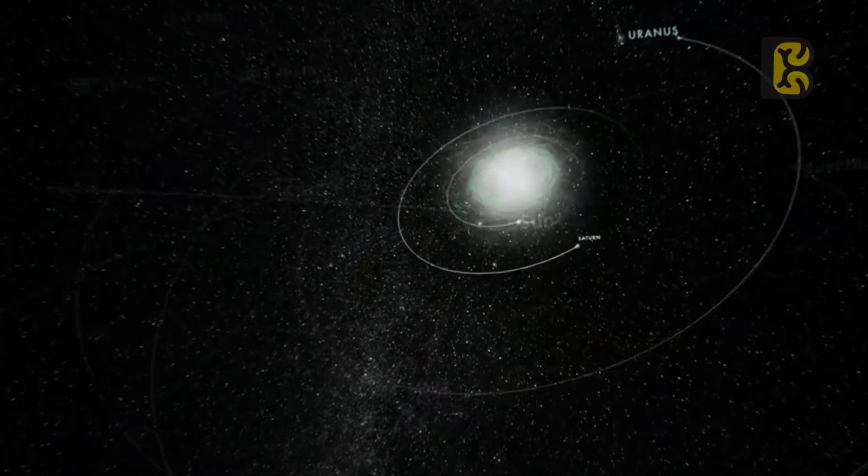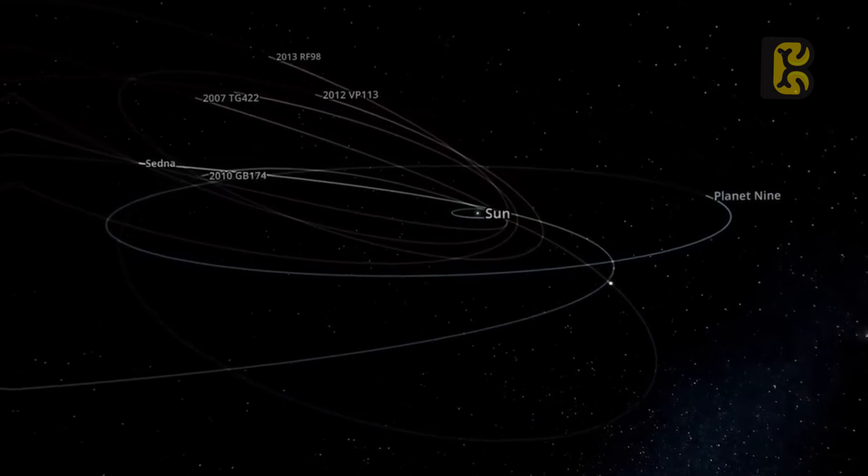From the beginning until now, whenever we have observed any gravitational anomaly, a breakthrough has always followed. And in the case of Planet 9 in our solar system, a strong gravitational anomaly is also observed, not in one or two, but in more than 200 objects.